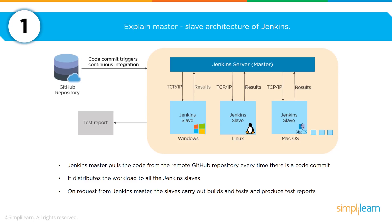The first question you'll be asked is to explain the master-slave architecture of Jenkins. The Jenkins master will pull code from your remote Git repository such as GitHub and will check that repository every time there is a code commit. It will distribute the workload and the tests to all of the Jenkins slaves. On request, the master and the slaves will carry out all the builds and tests to produce test reports.